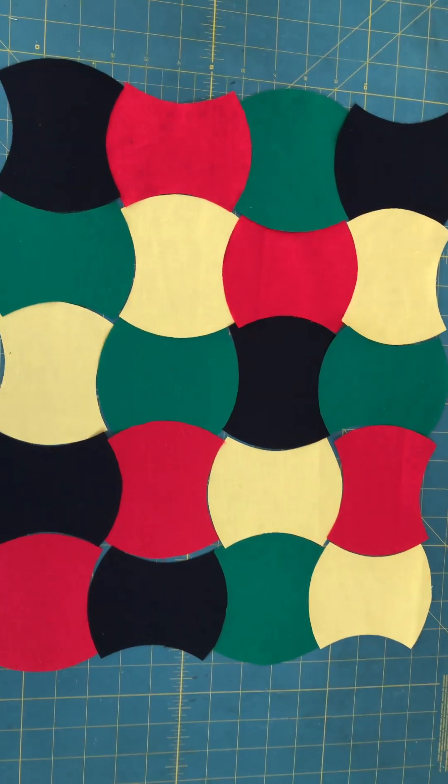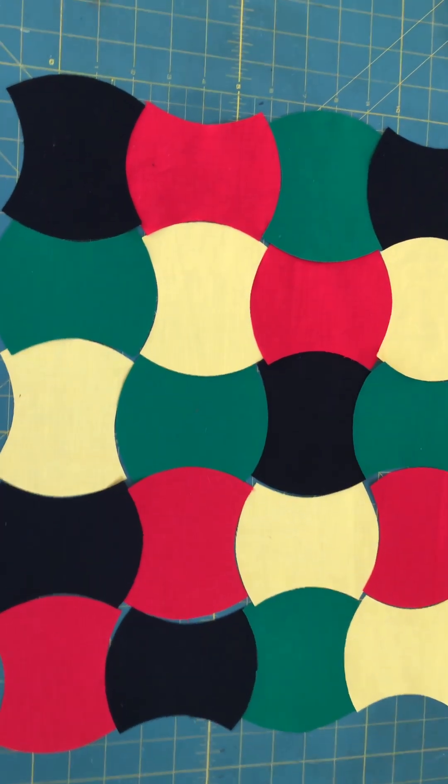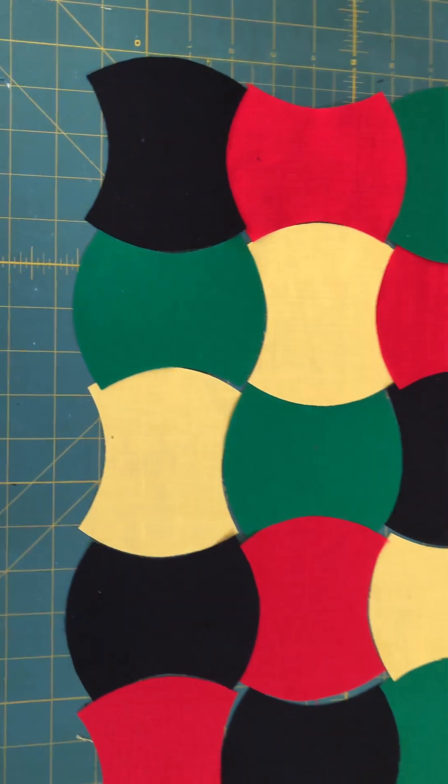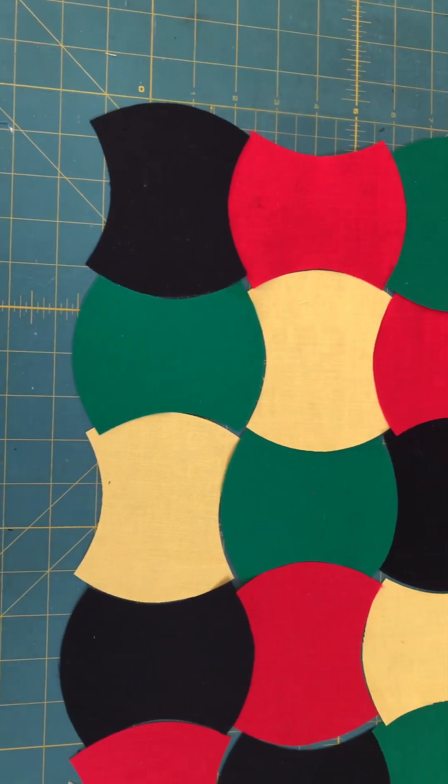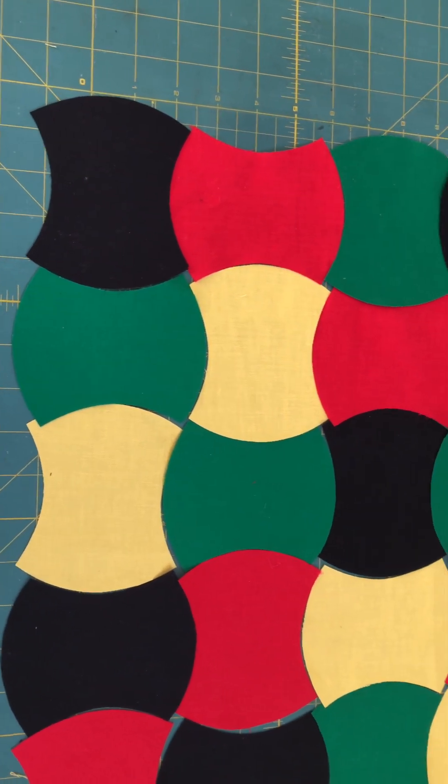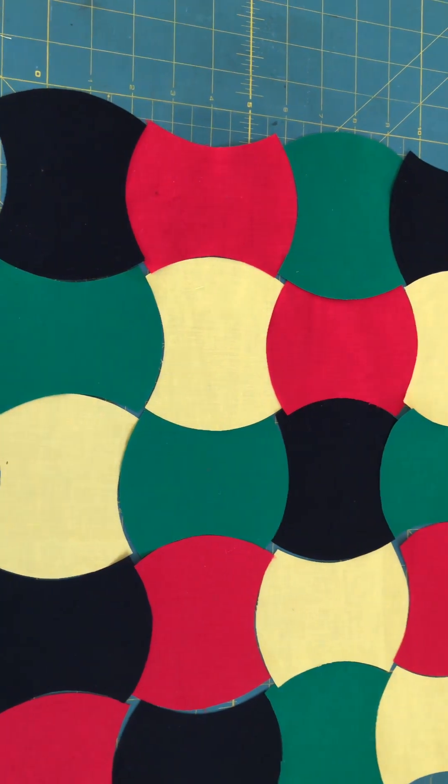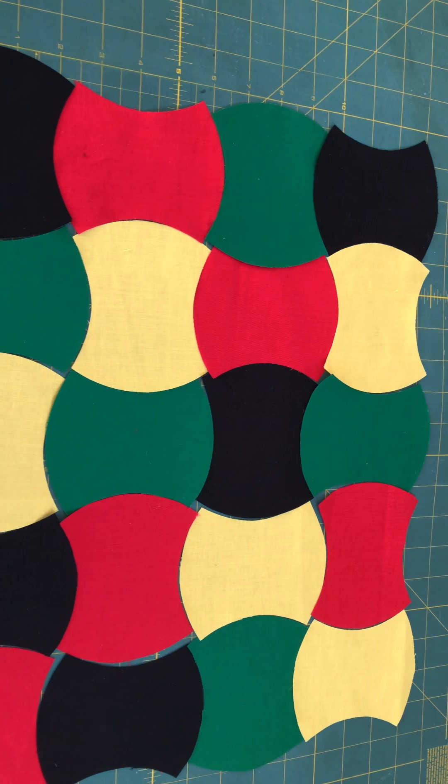This is the layout for my upcoming patchwork placemat. I used the four inch apricot template to cut these quilt blocks, apricot quilt blocks.